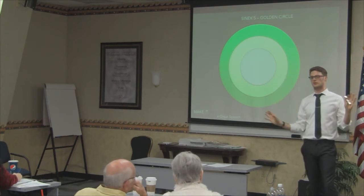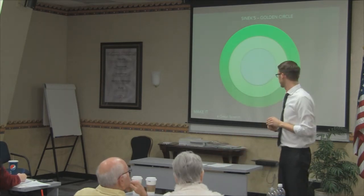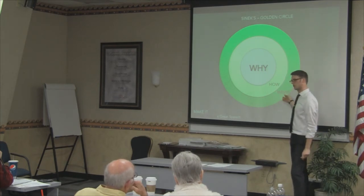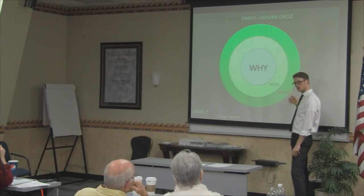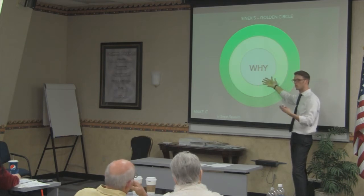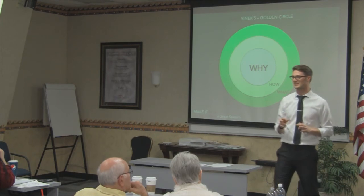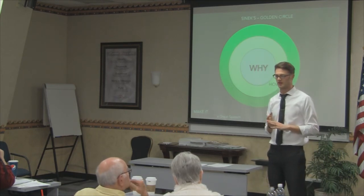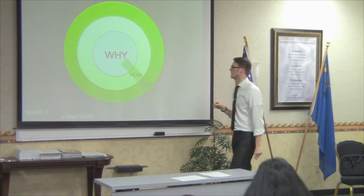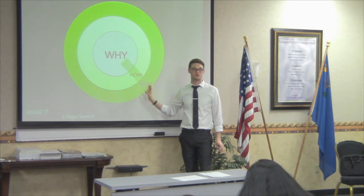It's called Simon Sinek's Golden Circle. 99% of the world focus on what, how, and why — they say, what do I want to do? How am I going to do it? And why is it important? But 1% of the world — the Steve Jobs, the Wright brothers, the Martin Luther King — do something differently. Simon Sinek discovered they focus on why they want to do it, how it's going to be done, and what it's going to produce. This seriously revolutionized my life.